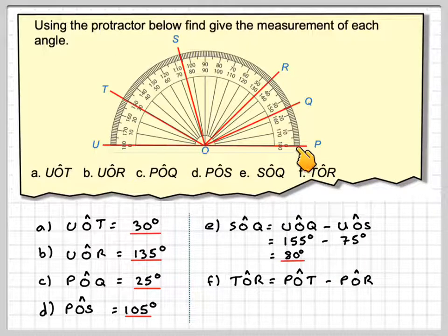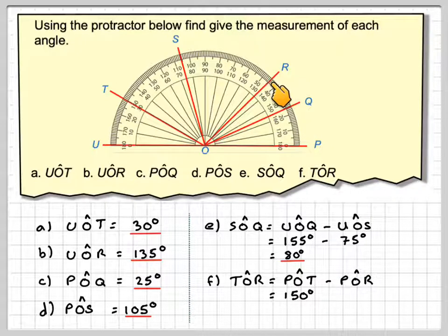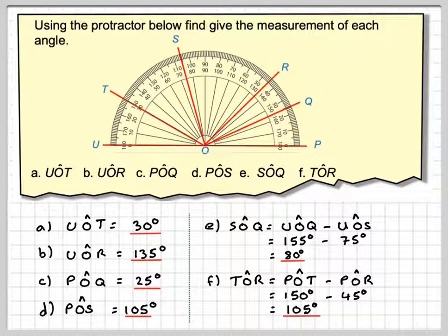So as I'm starting from P, I'm going to use the outside of the protractor. So it's going to be 150 minus 45 degrees, which gives me 105 degrees.